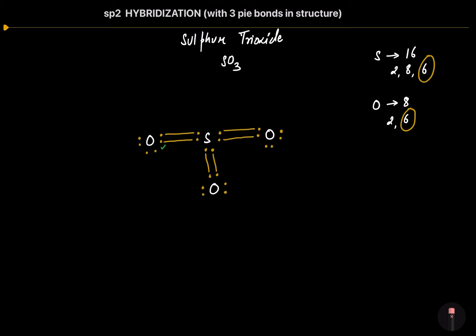Why is sulfur expanding the octet? Because sulfur is having 3d vacant orbitals for the expansion of the octet. Oxygen is not having 2d vacant orbitals, so oxygen cannot expand its octet — but sulfur can because sulfur is having 3d vacant orbitals.